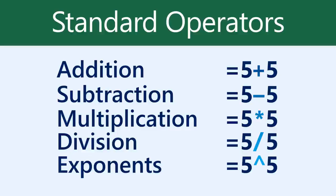You're probably used to seeing equations like 5 plus 5 equals, but in Excel, the equal sign comes first. That's because the cell itself contains, or is equal to, the formula and its value.